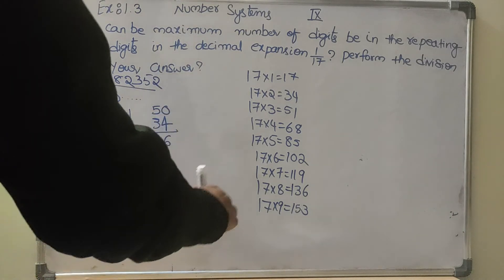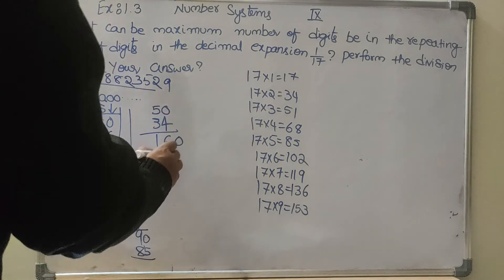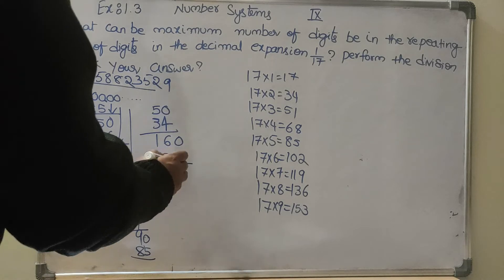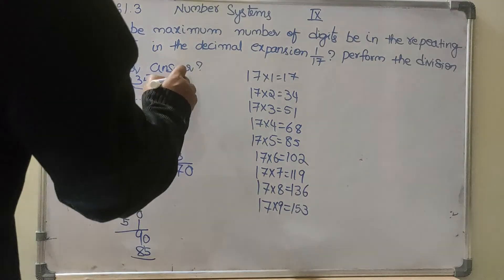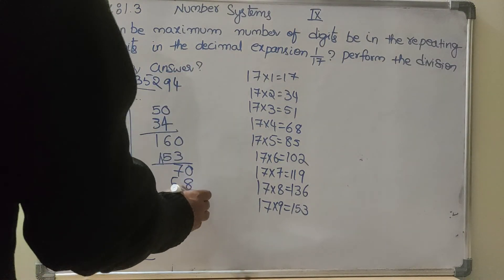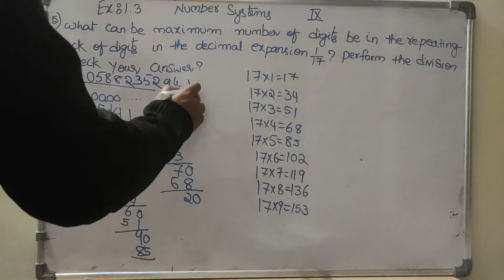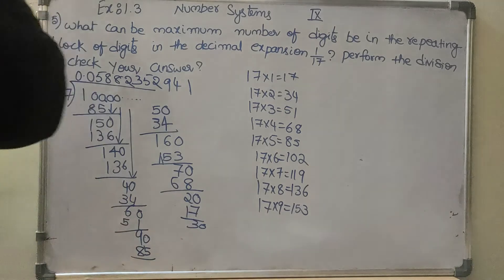16 is the remainder, 0 comes here, so 9 times, 153, 7 is the remainder. 0 comes here, then 4 times, 68, 2 is the remainder. 0 comes here, 17's are 17, 3 is the remainder, 0 comes here.